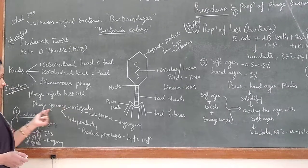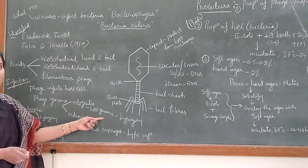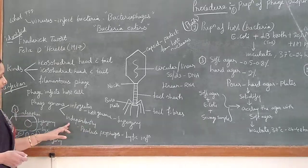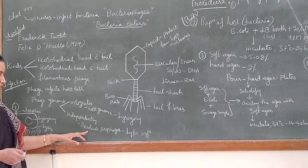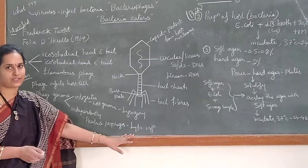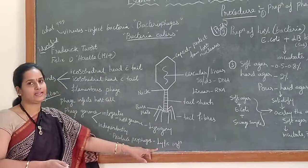Either the phage genome can integrate into the host genome - that type of infection is known as lysogenic. Or it can independently replicate and produce the prophages, which is considered as the lytic infection. So there are two types of infection: lysogenic or lytic infection.